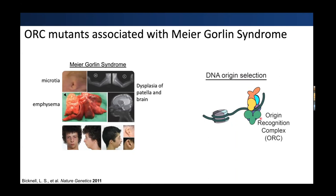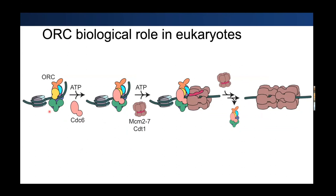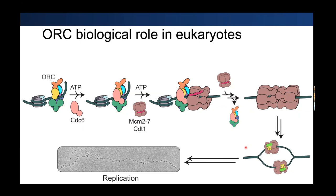Going into further detail on DNA origin selection: ORC binds to DNA — somewhat a mystery in higher eukaryotes where it specifically binds, but it has been shown to be influenced by nucleosome positions. After ORC binds, it recruits CDC6 to complete the ring of the complex, then recruits and orients the MCM helicase, then recruits a second helicase to form a double hexamer. At that point ORC exits, the helicase opens up the DNA, allowing the replication machinery to come in. Eventually, cell division.